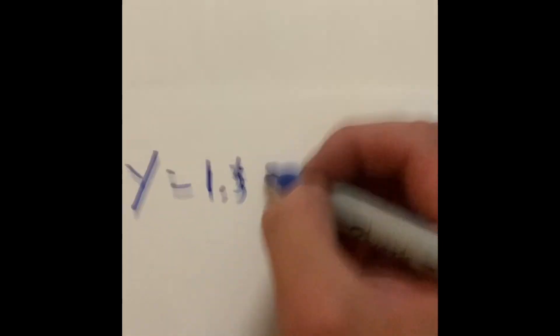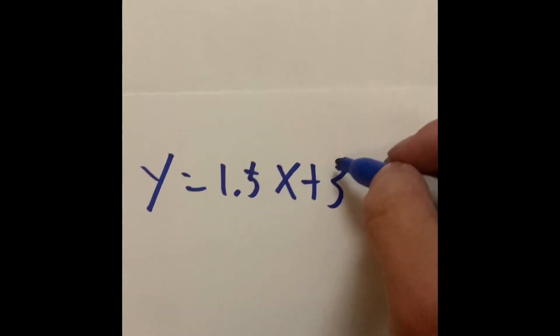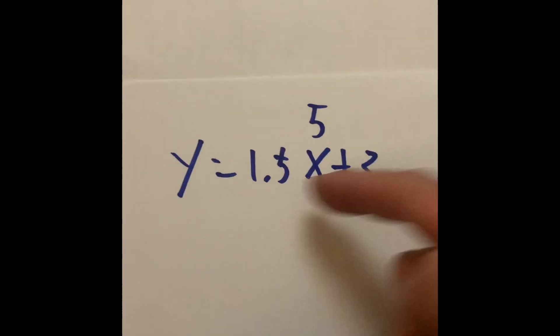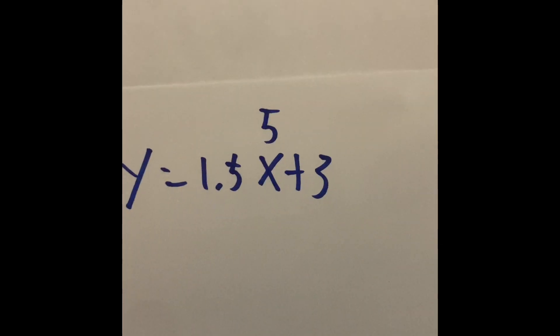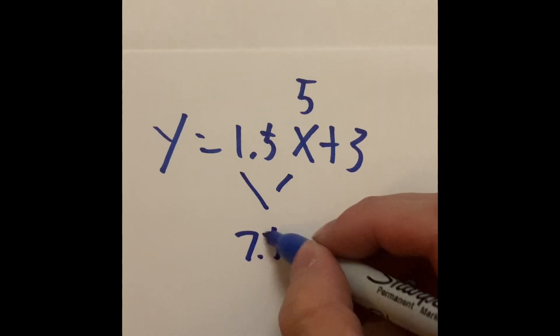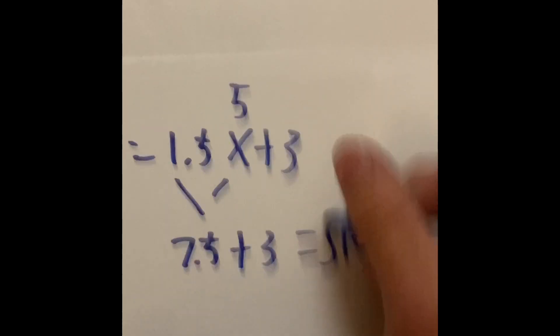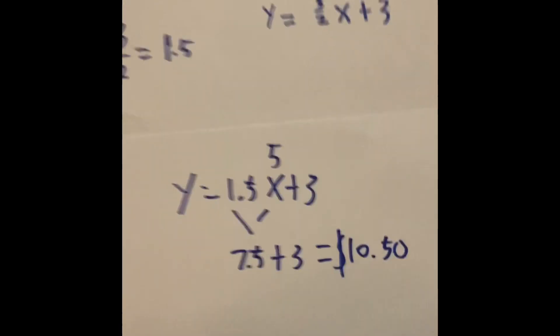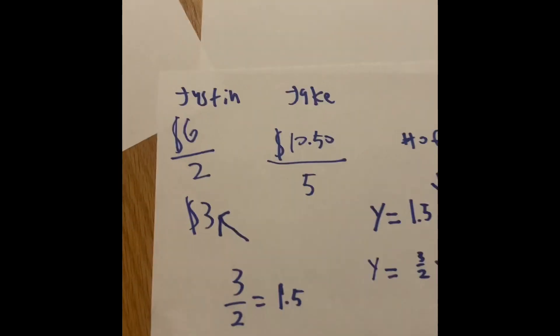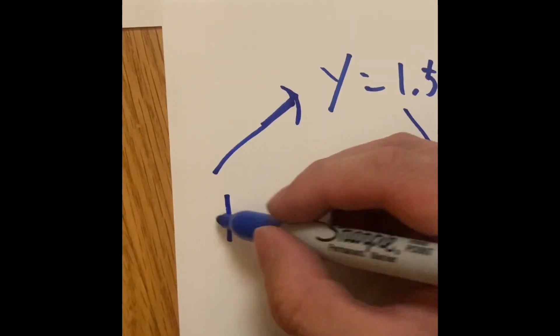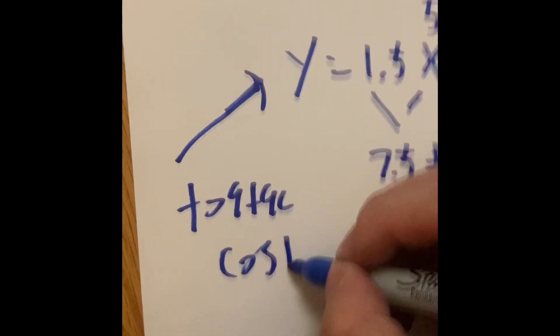If we start with Jake for three dollars, if we do y equals 1.5x plus 3, he selected five toppings. And that would bring us to 1.5 times 5 to 7.5. Then we add that by three, it's going to equal 10.50. Ten dollars and fifty cents for Jake to buy, or to spend, on that ice cream of five toppings. And y is going to represent the total cost of the ice cream.